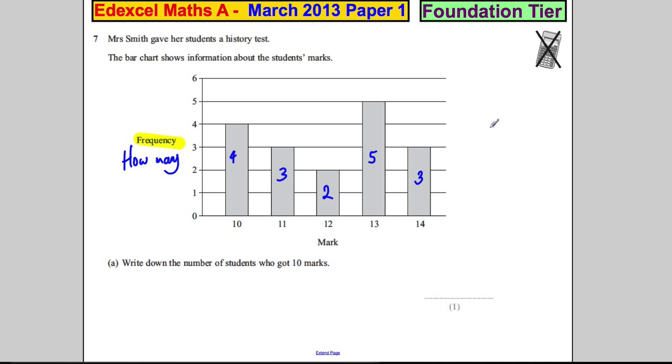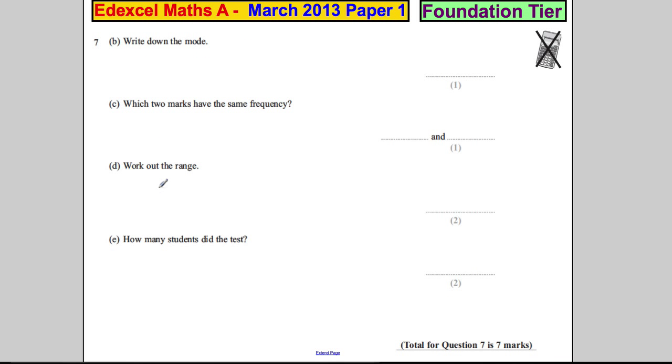Okay, sorry for that interruption. It was the phone. Let's move on. Part A, write down the number of students who got 10 marks. Well, four students got 10 marks, we can see there.